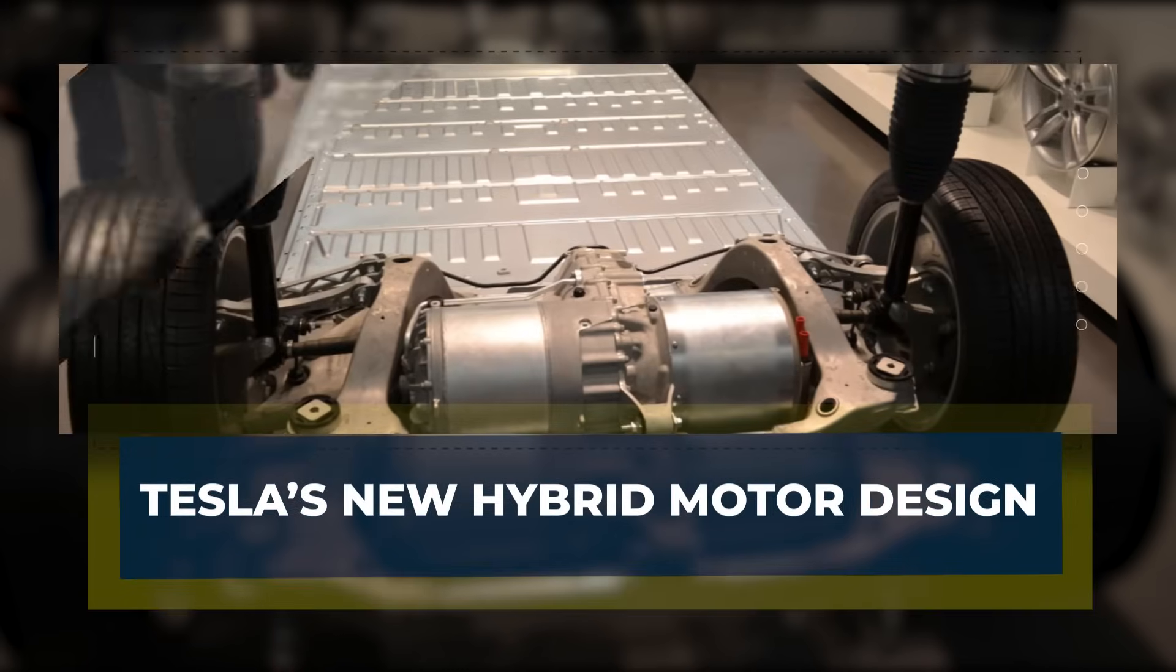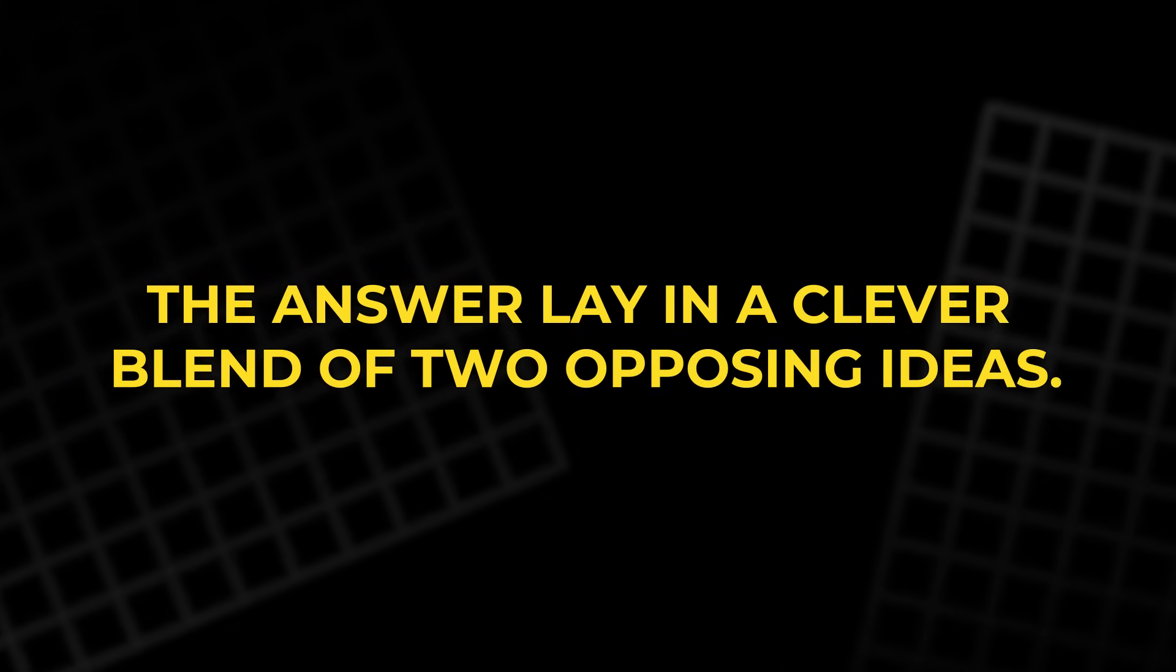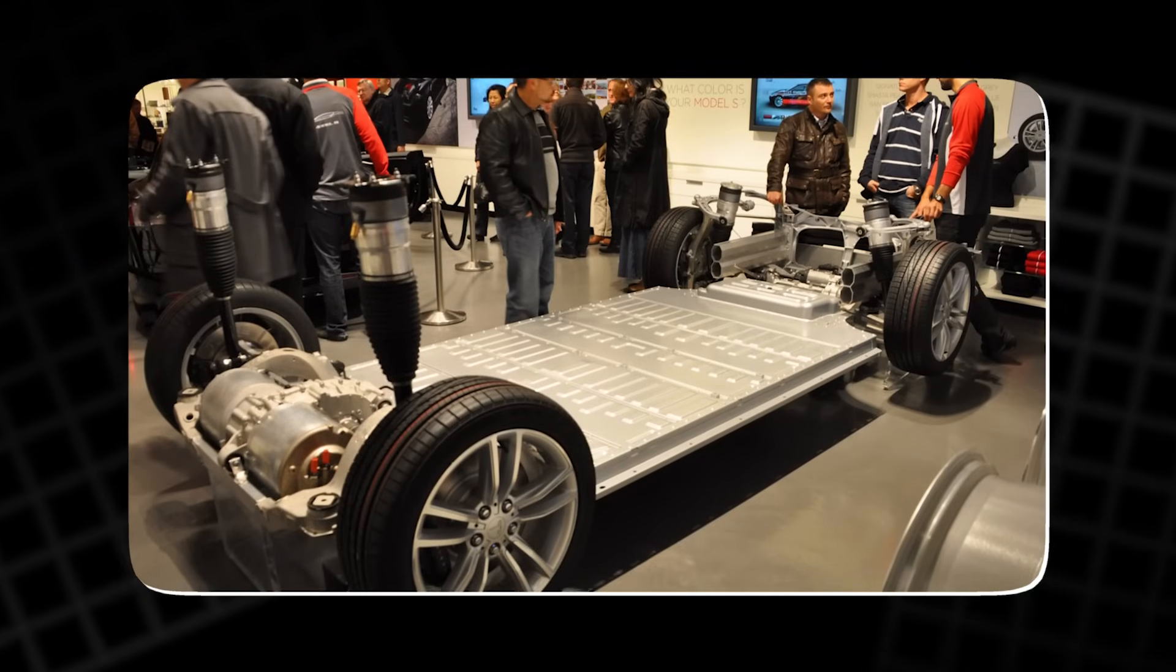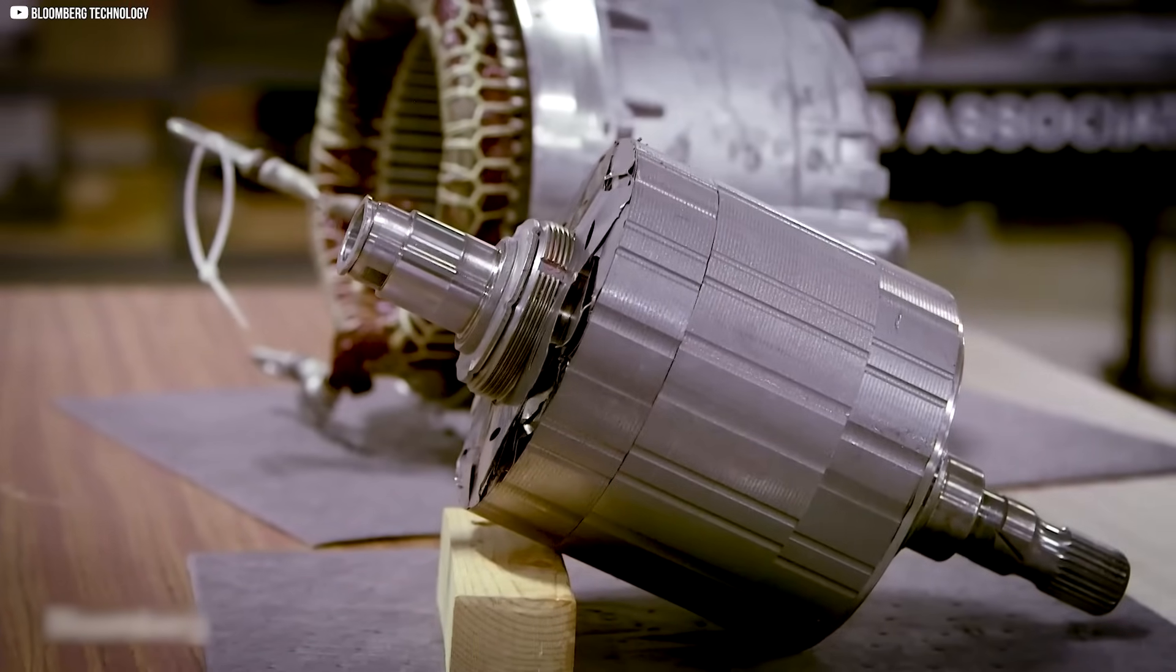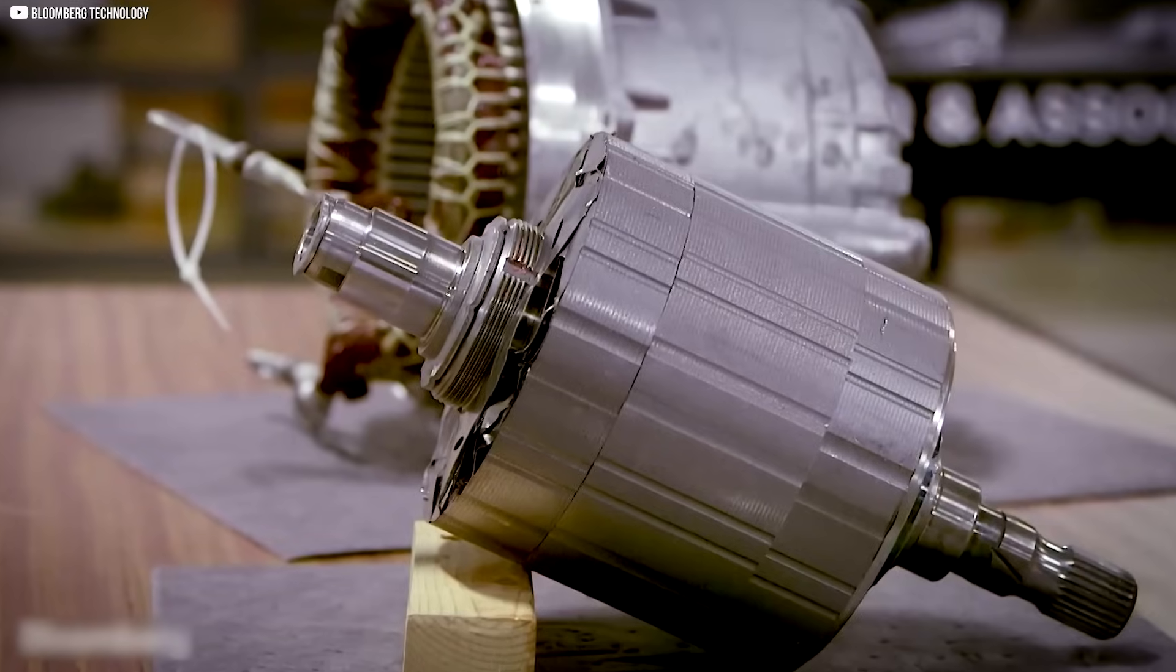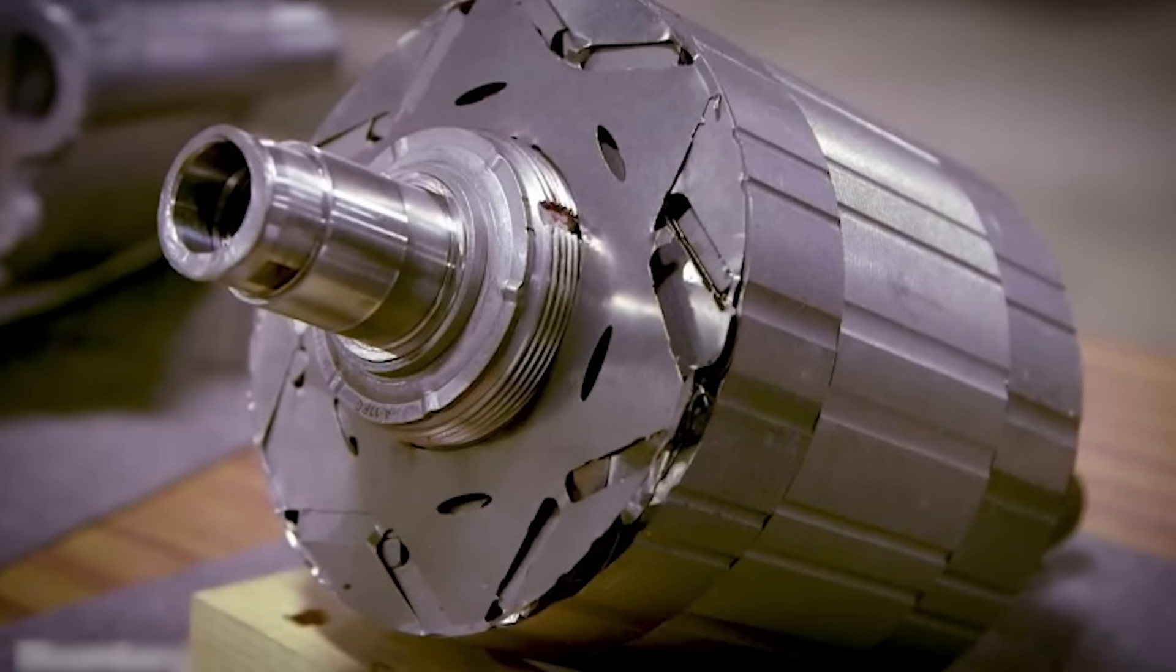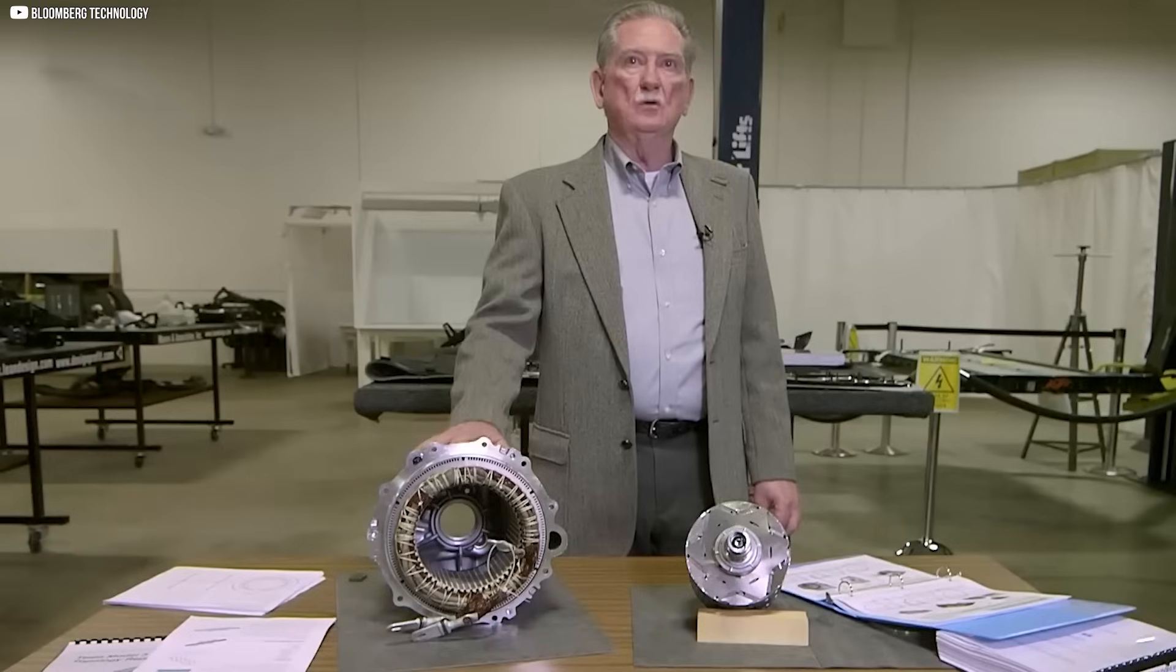The answer lay in a clever blend of two opposing ideas. Instead of choosing between a permanent magnet motor and a reluctance motor, Tesla engineers asked a simple but bold question: why not use both at the same time? This thinking gave birth to Tesla's internal permanent magnet synchronous reluctance motor, or IPM-SYNRM for short. At the heart of this design was a rotor that combined the magnetic force of permanent magnets with the geometric advantages of reluctance-based torque. But there was a trick to making it work.